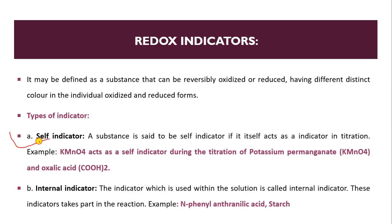First type is self indicator. A substance is said to be self indicator if it itself acts as an indicator in a titration. For example, when we are titrating potassium permanganate with oxalic acid, the KMnO4 itself acts as an indicator. So it is known as self indicator. We are not adding another indicator from outside.